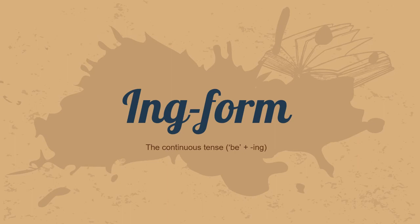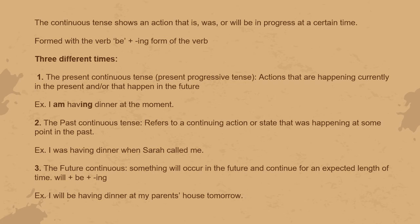The second grammar point I'm going to explain is the ing-form, which is used for the continuous tense and is formed by using the verb 'to be' plus the root of the verb plus -ing. The ing-form shows an action that is, was, or will be in progress at a certain time — either in the past, present, or future. There are three different tenses.